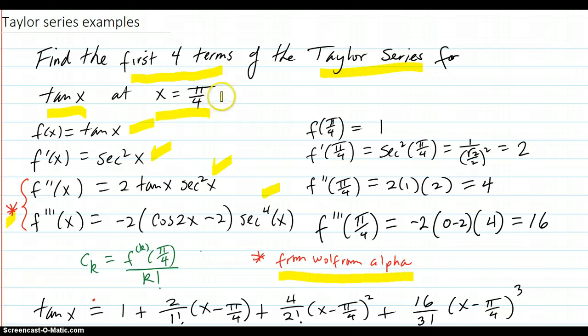Then evaluate it at π over 4. You get 1. You work this out, you get 2, 4, 16. Then your coefficients of your terms are going to be the kth derivative evaluated at π over 4, which is what these were, over k factorial.